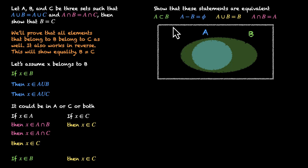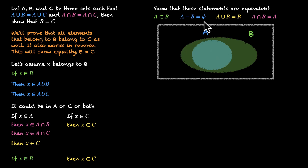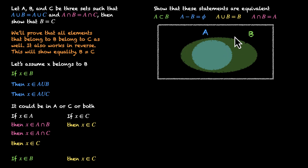The second statement says A minus B is the empty set (phi). Since A is inside B, subtracting all elements of B from A leaves nothing — A minus B is phi. The third says A union B equals B: combining all elements of A and B gives B, because whatever is in A is also in B. From the image, A union B equals B.